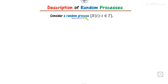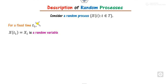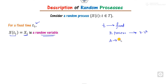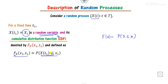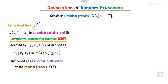What are the descriptions of the random process? For a random process X(t) with index set T, if we fix a time t₁, it becomes a random variable. Remember: whenever t is fixed, the random process reduces to a random variable. We can then define the CDF of this random process as F(x, t) = P(X(t) ≤ x). Since this involves only one time parameter, it is called the first-order distribution of the random process.